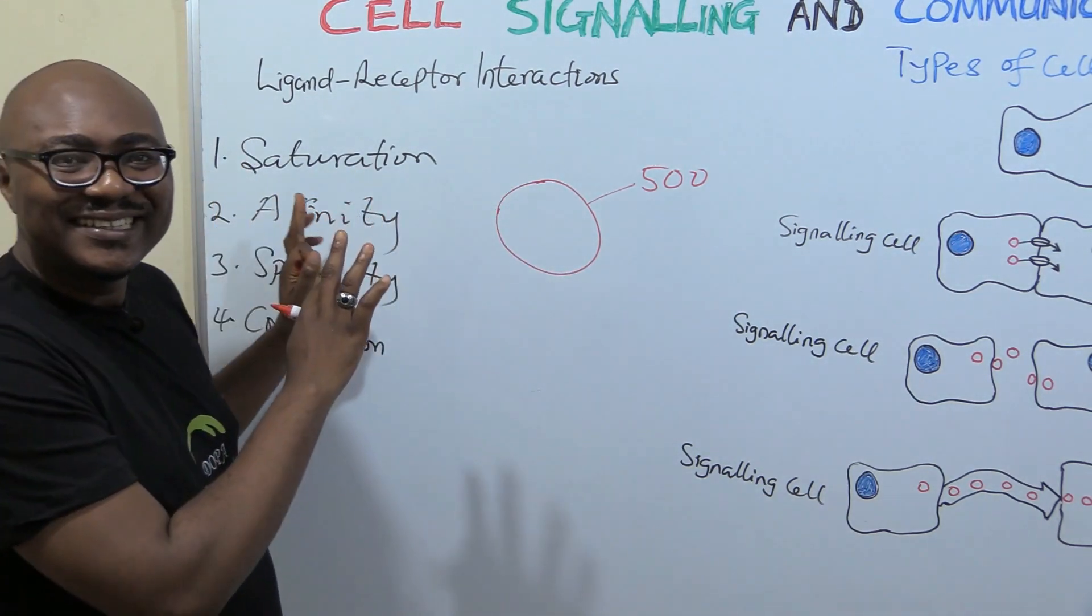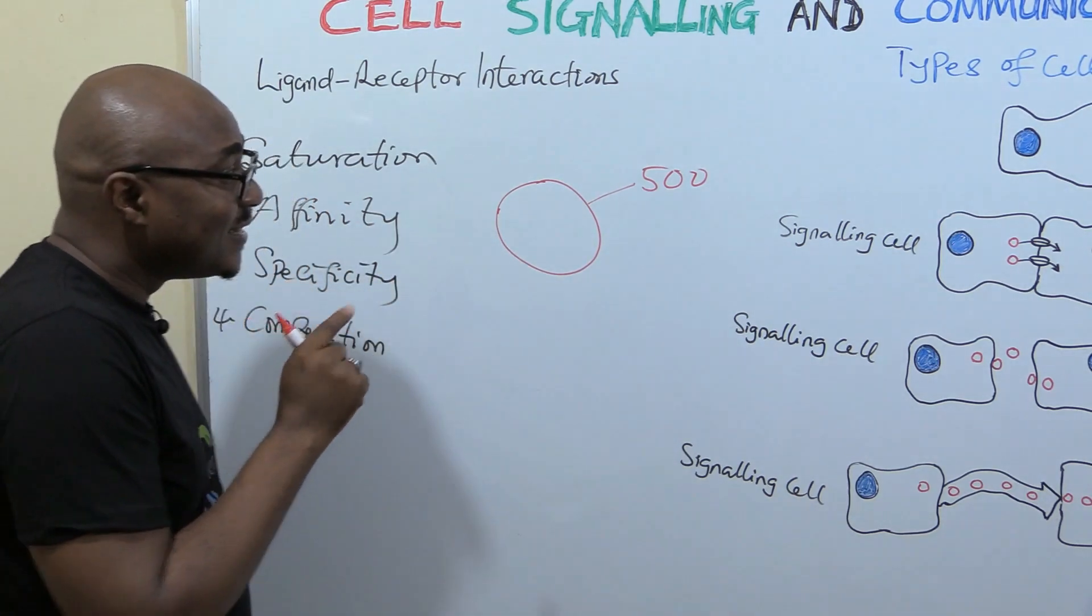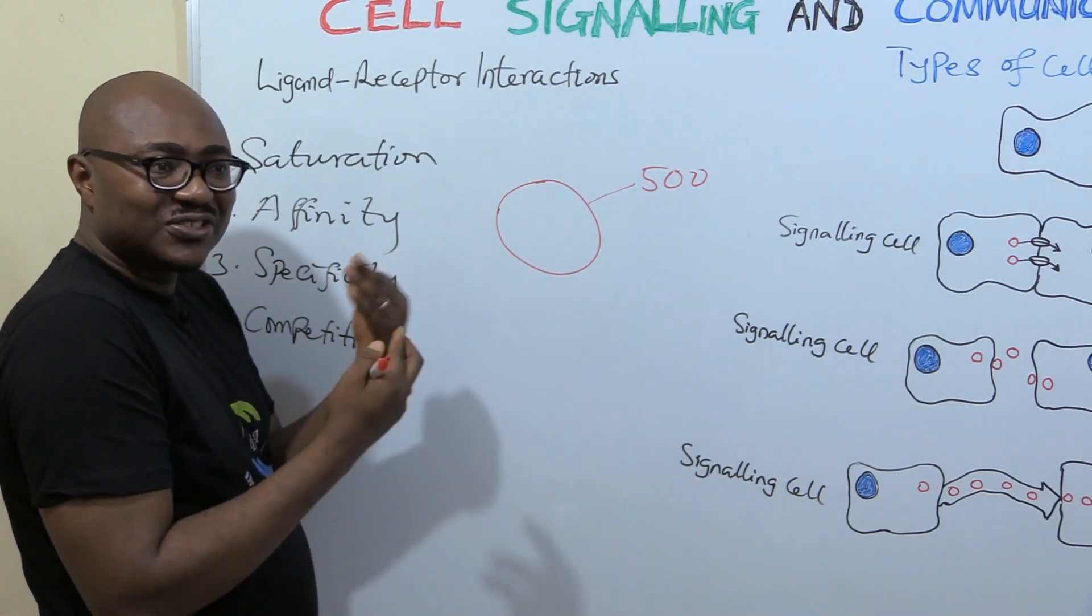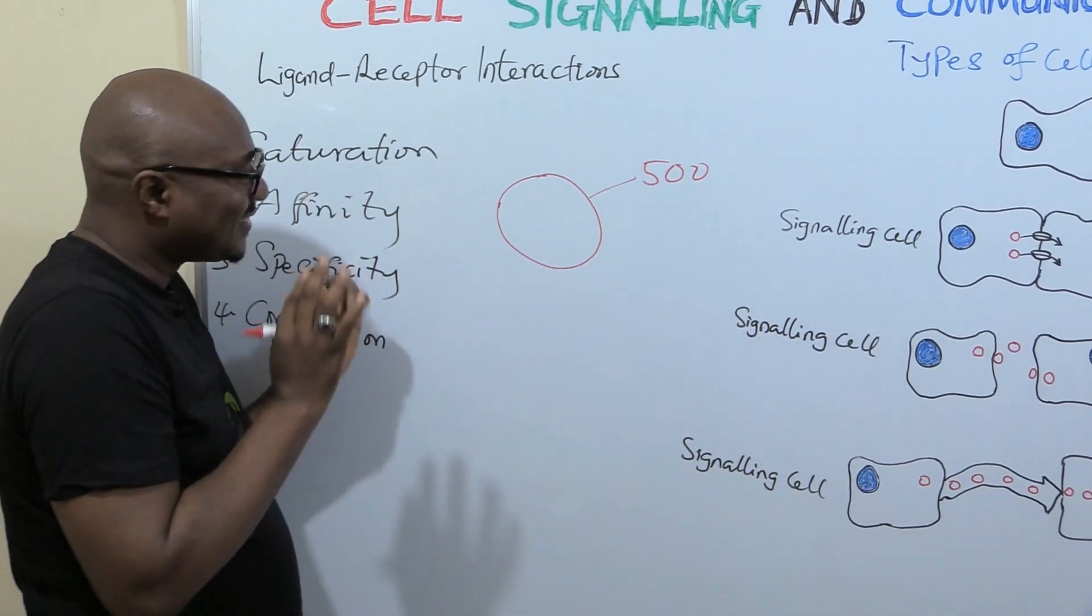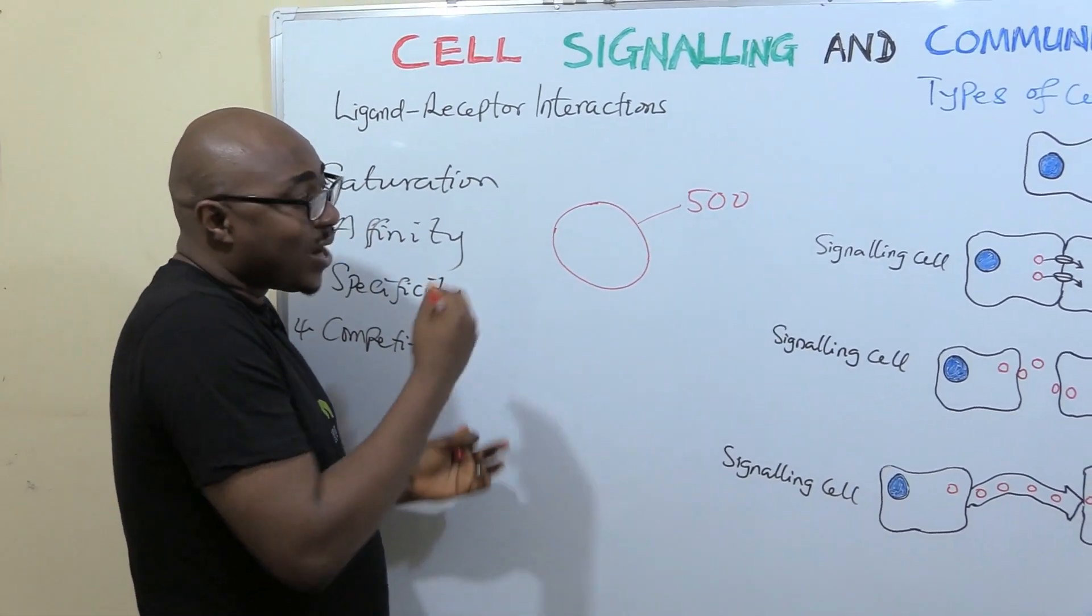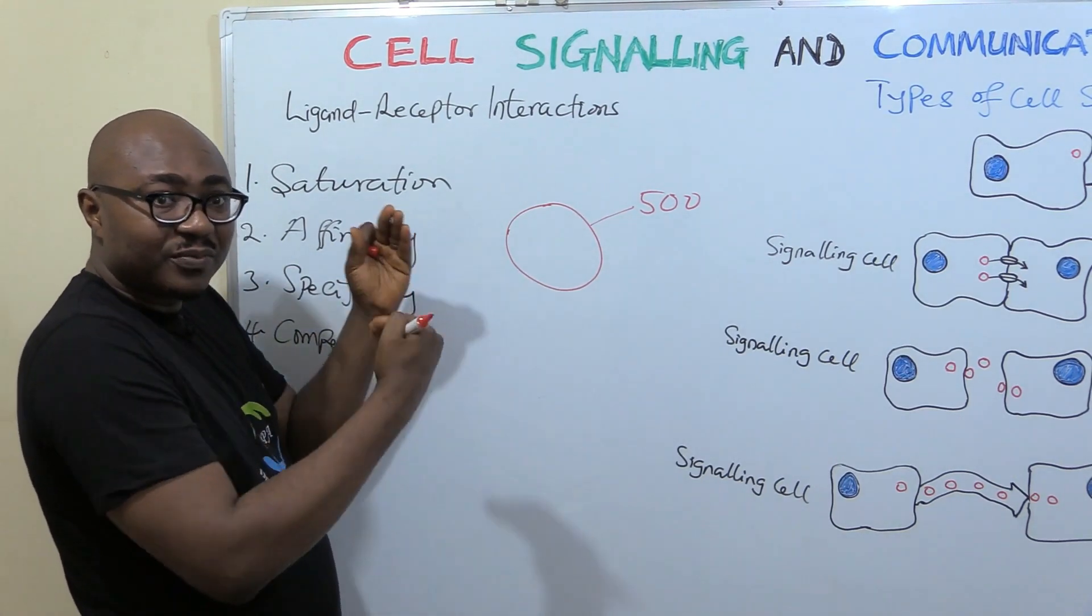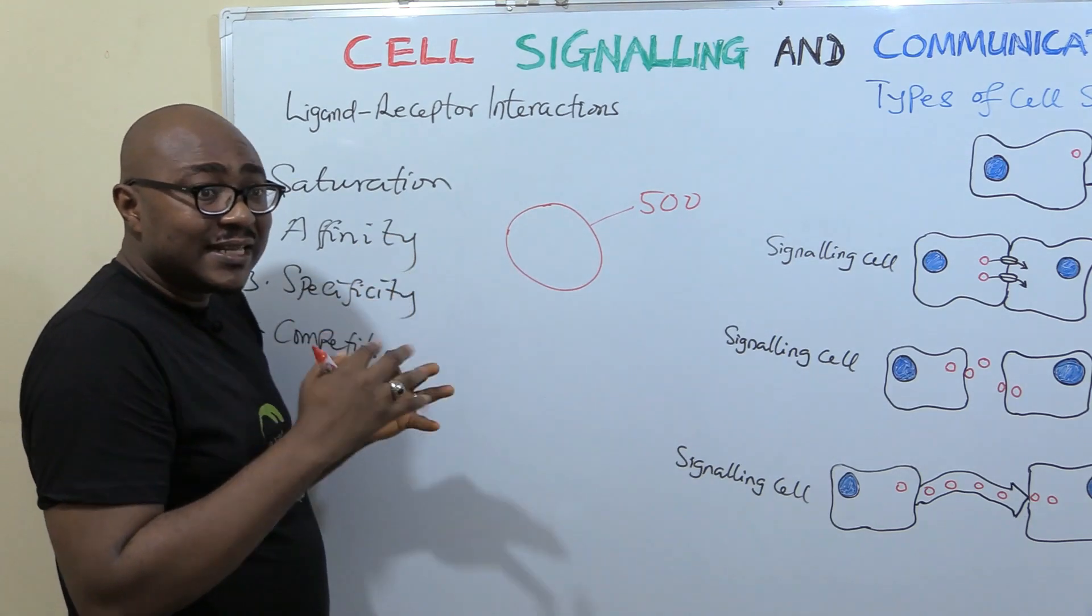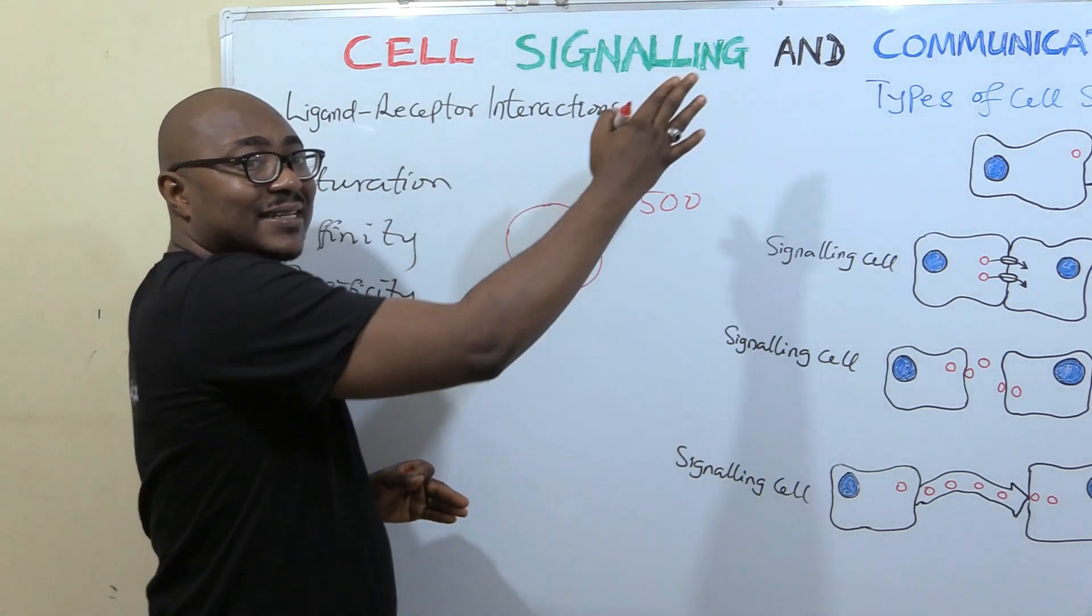Let's assume that in this cell you have just 500 receptors for a particular ligand, and then you have 500 molecules of the ligand coming to bind and elicit a response. Those 500 will occupy every single space. Then if you now have more ligands for that receptor coming, what will happen? There is no space again, the spaces are occupied. That is what saturation is talking about.